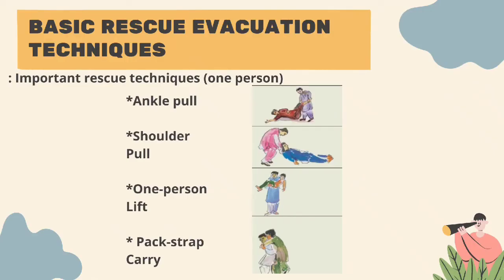Basic rescue evacuation techniques. Evacuation and safe rescuing of victims by applying simple manual techniques can save the life of the victim. Regular hands-on practice and drills will help the rescuer to save lives in a quicker and safer manner. There are many types of rescuing techniques, but we will discuss few important and improvised techniques. Important rescue techniques for one person include the ankle pull, shoulder pull, one person lift, and pack strap carry.